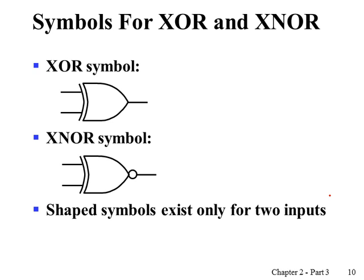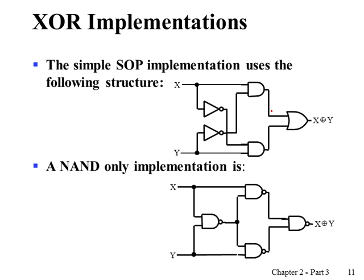Here is the symbol for exclusive OR and exclusive NOR. We attach an arc in front of the OR gate. This is the symbol for exclusive OR. If we put a bubble at the output of the OR gate, it becomes exclusive NOR. Strictly speaking, exclusive OR and exclusive NOR are defined only for two variables, so we have symbols for two inputs only.